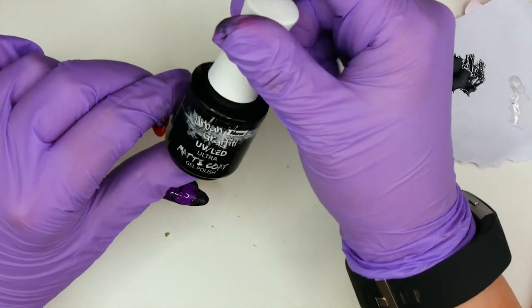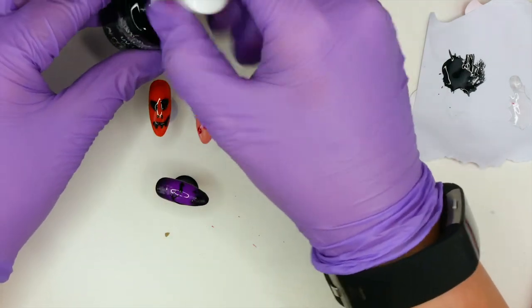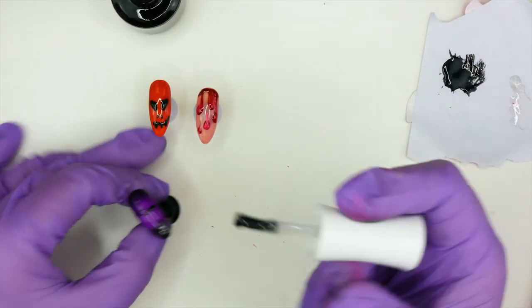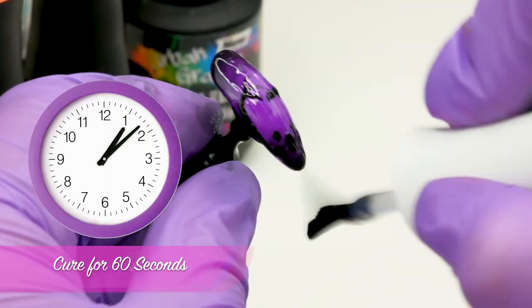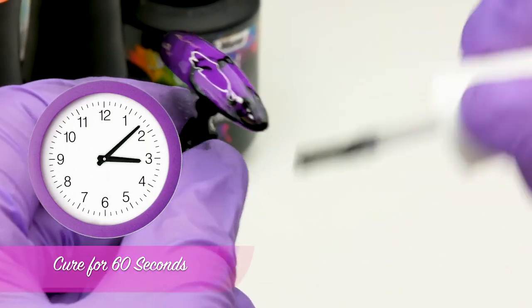Now with our final one, we're going to matte top coat that with the Ultra Matte Top Coat to give it a little something different from the other two. Pop that in for 60 seconds.